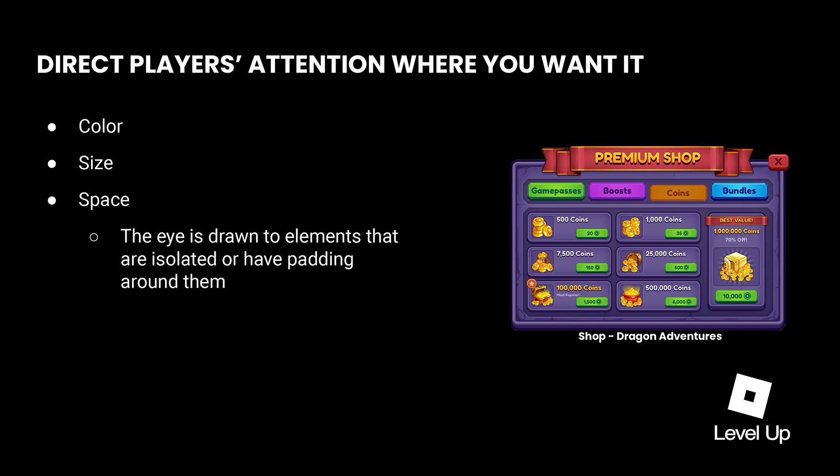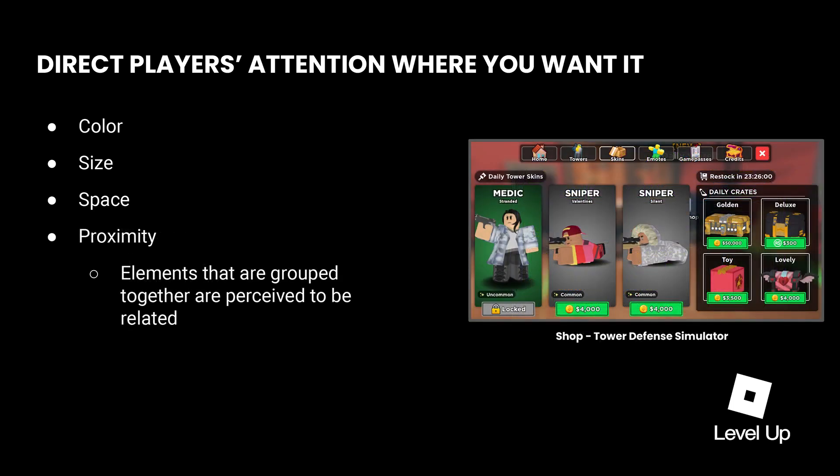In Dragon Venture's shop, space, size, and color all come together to strongly suggest that players notice the largest and most valuable currency bundle. The best value banner doesn't hurt either — and that's a best practice for shop UI design, by the way. Finally, close proximity between elements implies a relationship, and that can be used to visually group things together to help players make sense of what they're looking at. In Tower Defense Simulator, at a glance you know the three items on the left are related to each other and different from the cluster on the right, because of how size and proximity are used to visually group them.